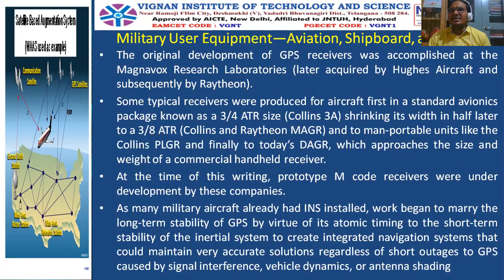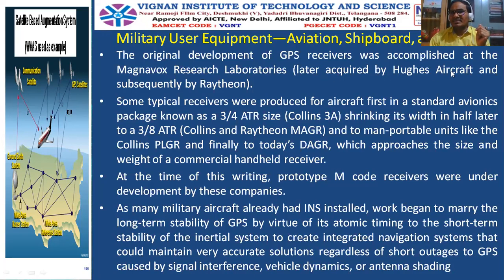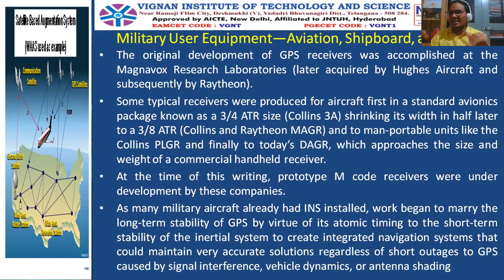Military user equipment for aviation, shipboard, and land navigation was developed by companies including Magnavox Research Laboratories, later acquired by Hughes Aircraft and subsequently Raytheon. Typical receivers were produced for aircraft in a standard 3×4 ATR avionics package — the Collins 3A — then shrunk to a 3×8 ATR size by Collins, Raytheon, and MAGR collaboratively. Man-portable units include the Collins PLGR portable GPS receiver, and today we have the DAGR, approaching the size and weight of commercial handheld receivers.